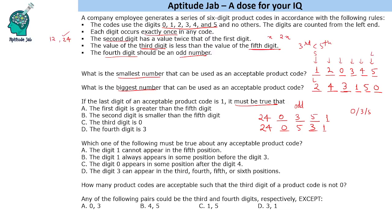Now let us look at the options. Option: the first digit is greater than the fifth digit — false. Option: the second digit is smaller than the fifth digit — in one case it is smaller, in the second it is not, so we cannot say it is definitely true. Option: the third digit is 0 — this is definitely true in both scenarios. Option: the fourth digit is 3 — not necessarily true. So the answer is that the third digit is 0.